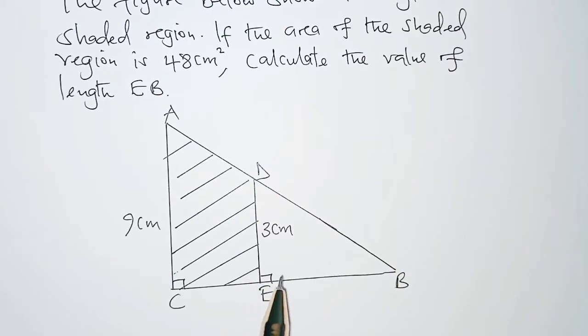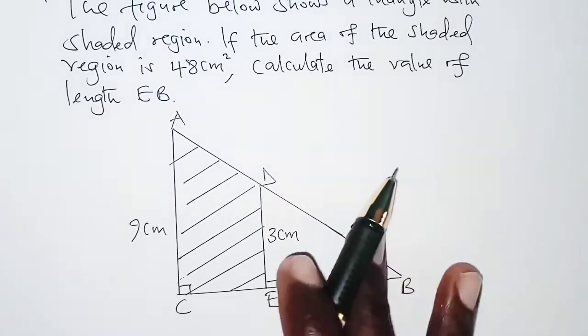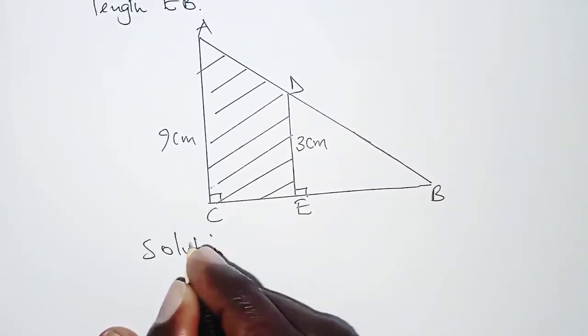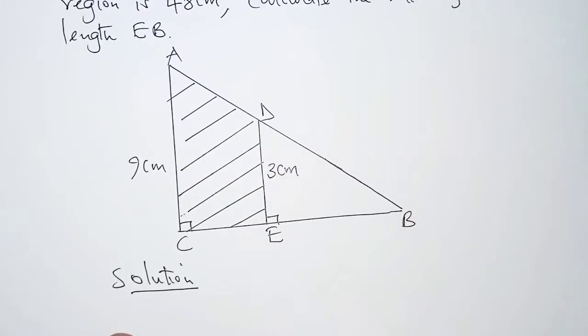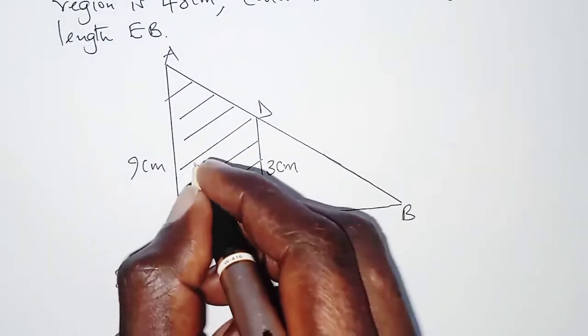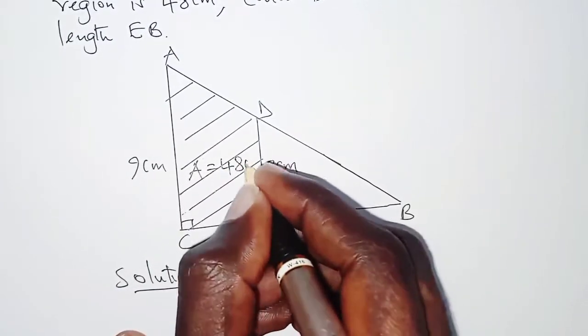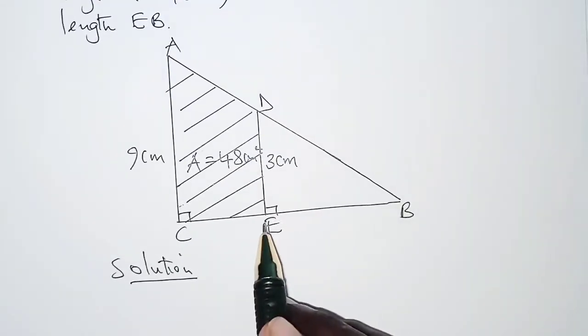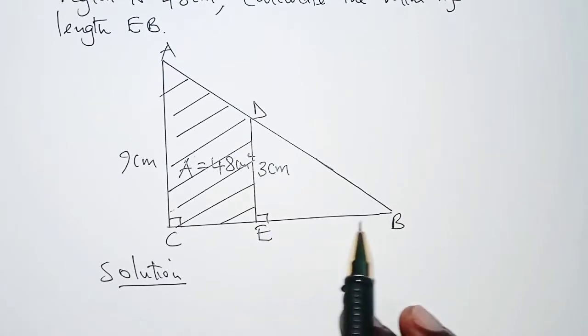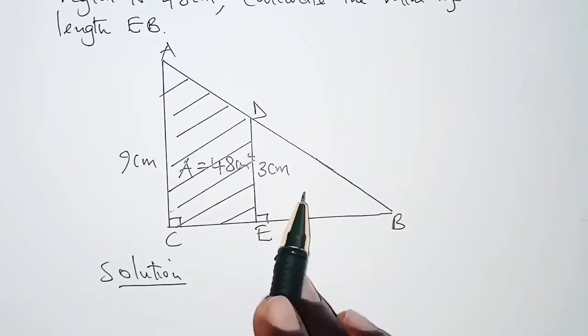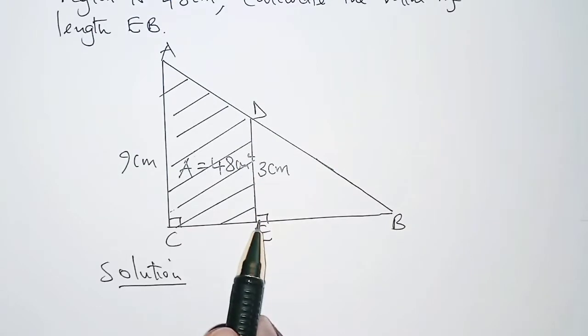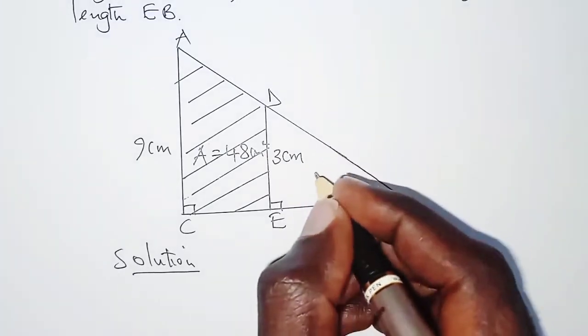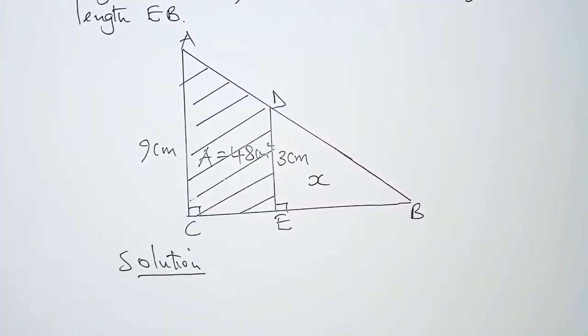So we have EB right here. We will solve this as follows: we are told that the shaded region has its area as 48 square centimeters and we are required to get length EB. We will be able to get length EB by first getting the area of this unshaded part which is triangular in shape. In order to get the area of the unshaded part, let's call it x. We will apply similarity.